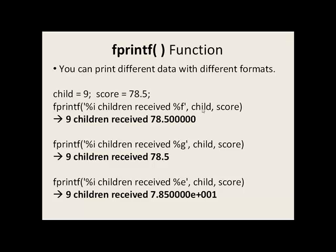So the value of child 9 will be put here where this percent i is located. So 9 children received. Then we come to our second percent. Score. Score is the second item in this list. So it gets associated with this second percent sign. And because we say it's percent f, it will be printed off with a decimal. 98.5000.